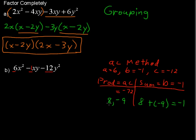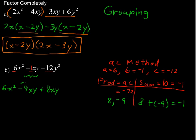Now we take these two numbers and rewrite the middle term as a sum using these two coefficients. It's often easier to write the negative coefficient first. So we rewrite 6x squared, then instead of negative xy we write negative 9xy plus 8xy, and then minus 12y squared.